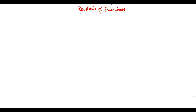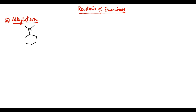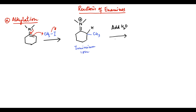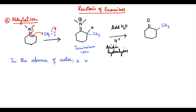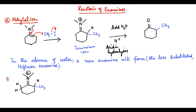Now the reactions of enamines. The first important reaction is alkylation at beta-carbon. Enamines are nucleophilic and reactive towards electrophiles. When treated with alkyl halide, the SN2 reaction occurs at beta-carbon due to pi donation by nitrogen, so the electrophile attaches at beta-carbon, rendering nitrogen positively charged — called an iminium intermediate. Iminium ion upon acidic hydrolysis removes nitrogen and restores the carbonyl group. In the absence of water, a new enamine forms on the less substituted side — the Hofmann enamine — as base abstracts a proton from the less substituted side.